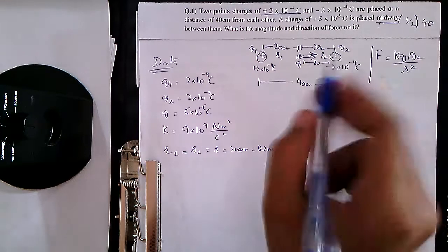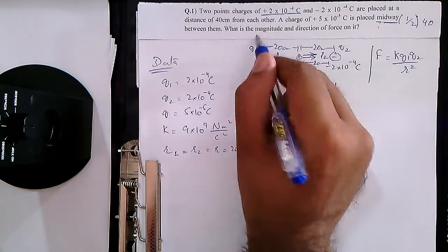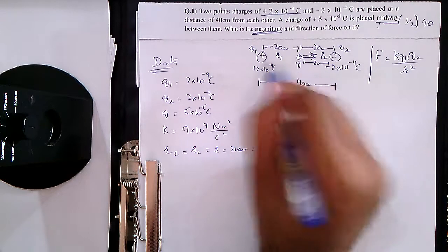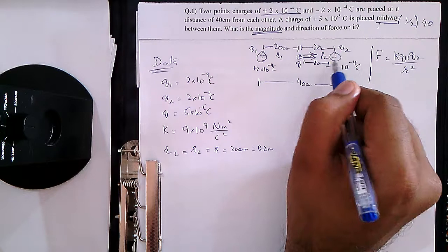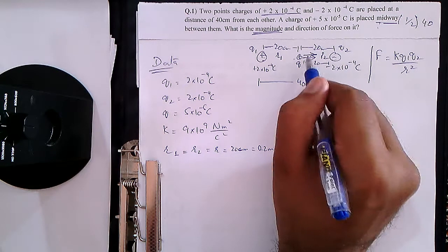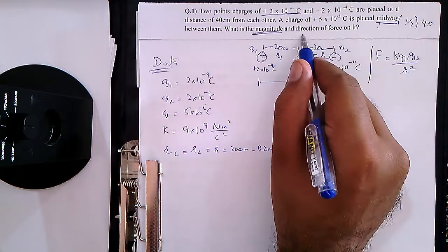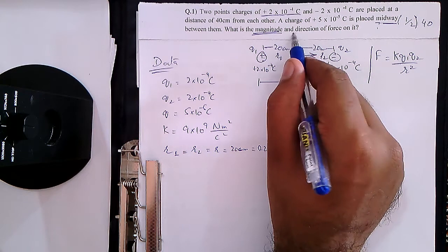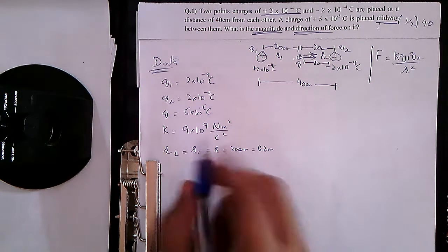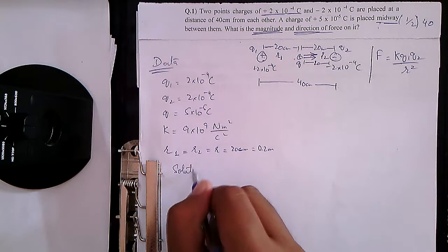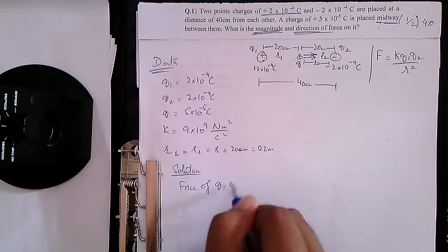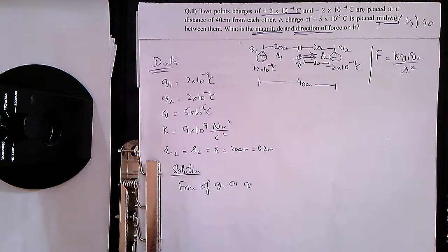The strategy is: first, apply Coulomb's Law to find the magnitude of force between Q1 and the middle charge Q. Then apply Coulomb's Law again to find the force between Q2 (the negative charge) and Q. Since both forces act in the same direction, add them together and state the direction of the resultant force.